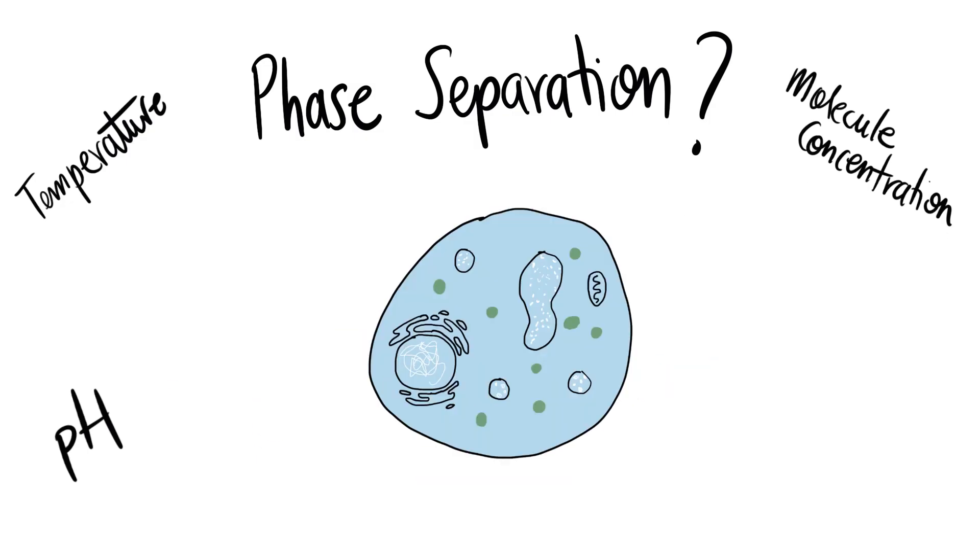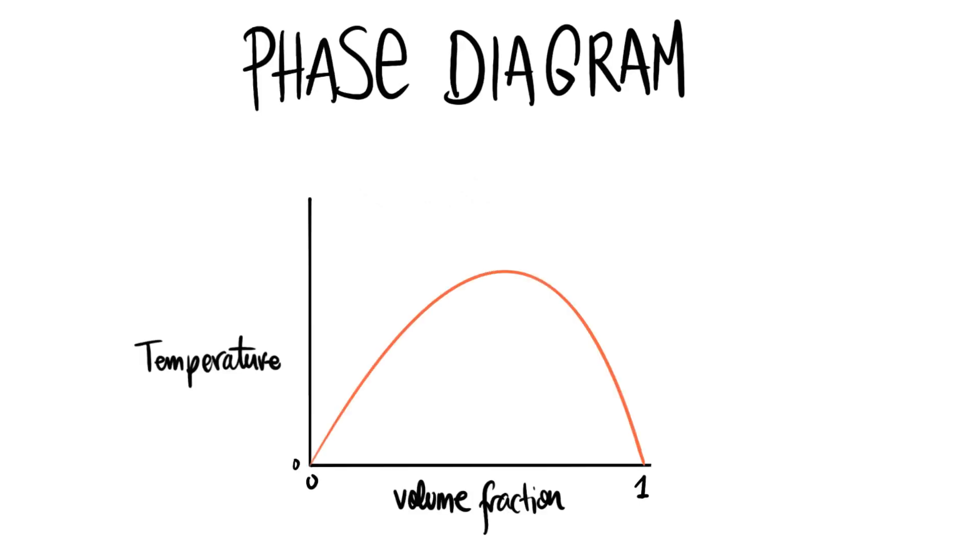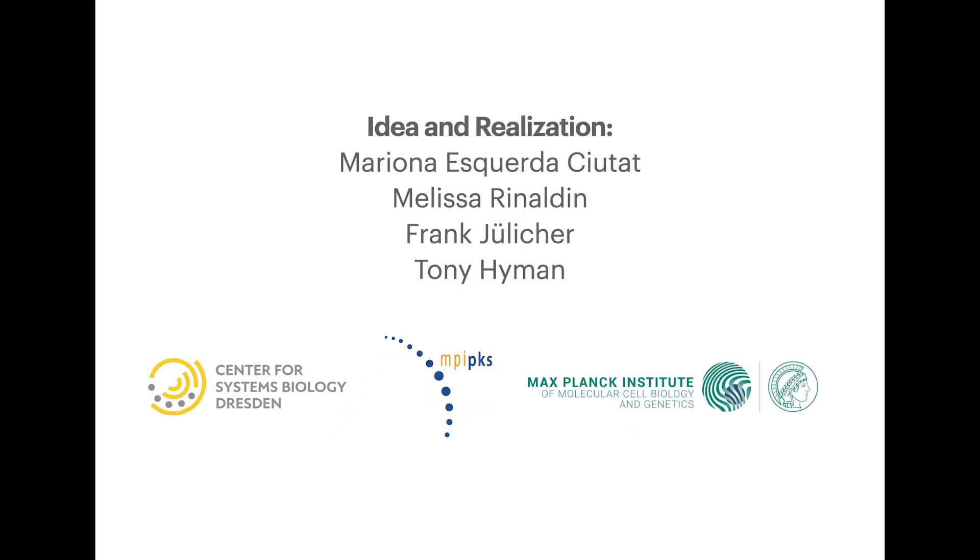In cells, the assembly and disassembly of condensates might be driven by changes in these factors. We use a graph called a phase diagram to predict whether there will be phase separation under certain conditions. Watch other science sketches to learn more.